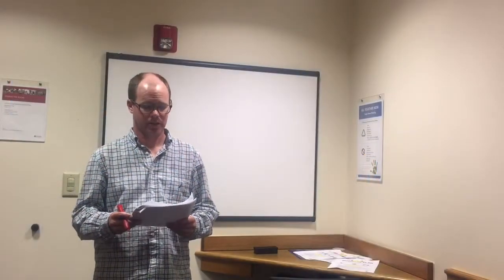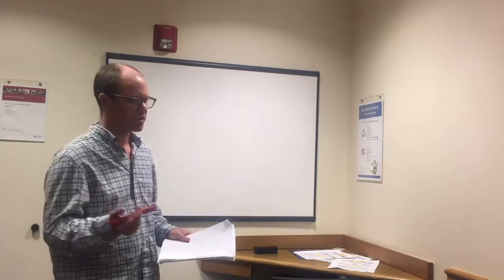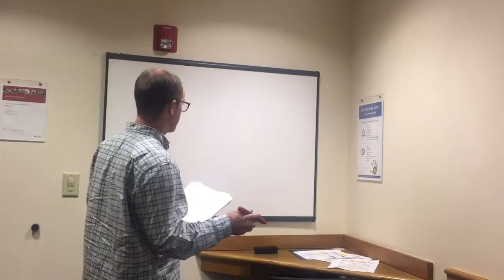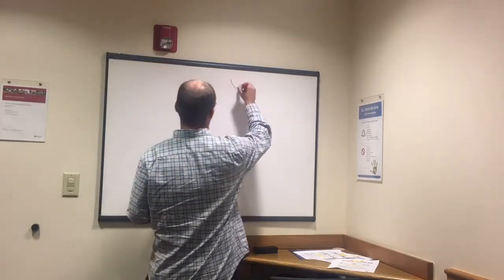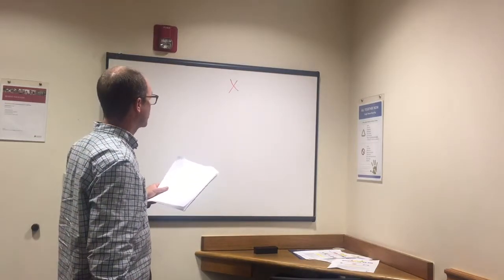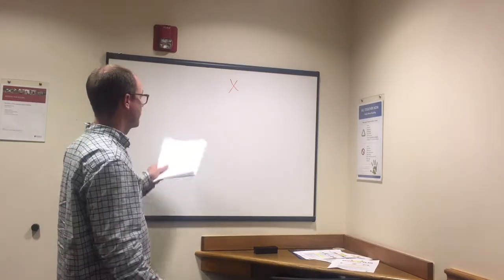We're going to look at polynomials here. First we need to have some terminology down. A monomial means one, right? Mono means one. An example of a monomial would be x by itself, one term. 5x also would be a monomial.